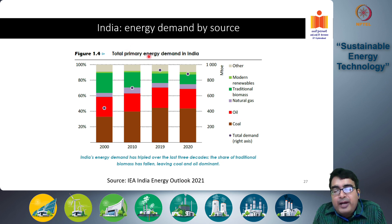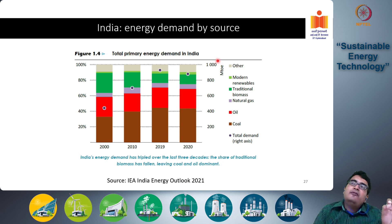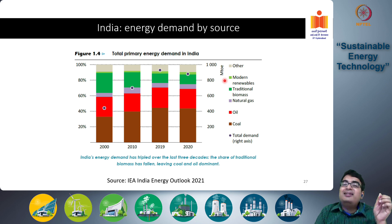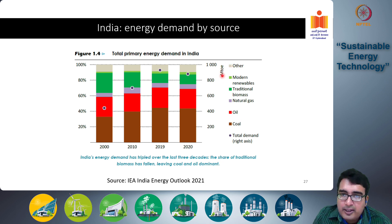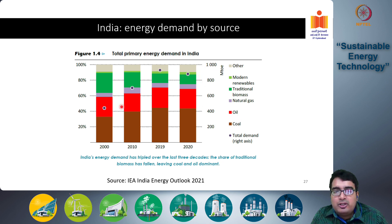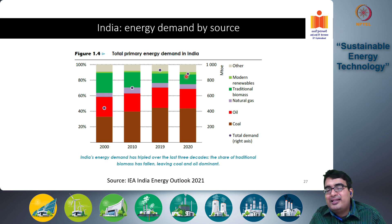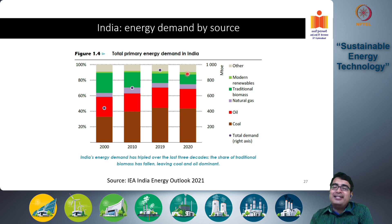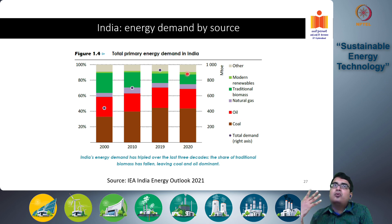This shows the total primary energy demand in India in millions of tons of oil equivalent (Mtoe). These dots represent total energy demand from 2000 to 2020. You can see a drop in 2020 because of the COVID pandemic, which is why I'm not showing more recent data compared to 2019 — the pandemic created a temporary decrease not in line with normal trends.